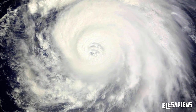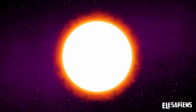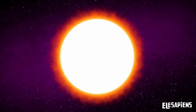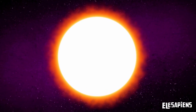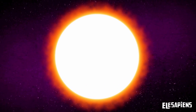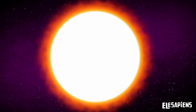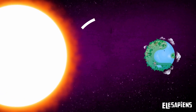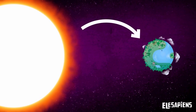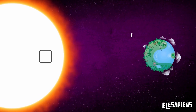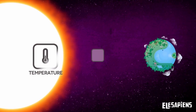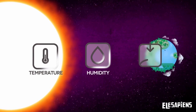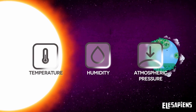But how do they occur? All atmospheric phenomena are originated by the sun. The sun influences all weather elements such as temperature, humidity and atmospheric pressure.